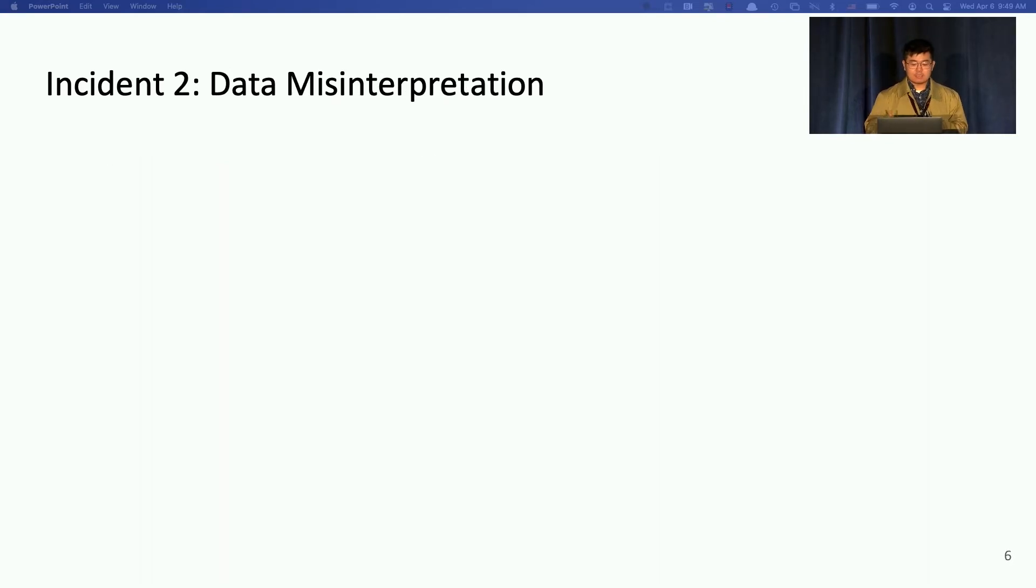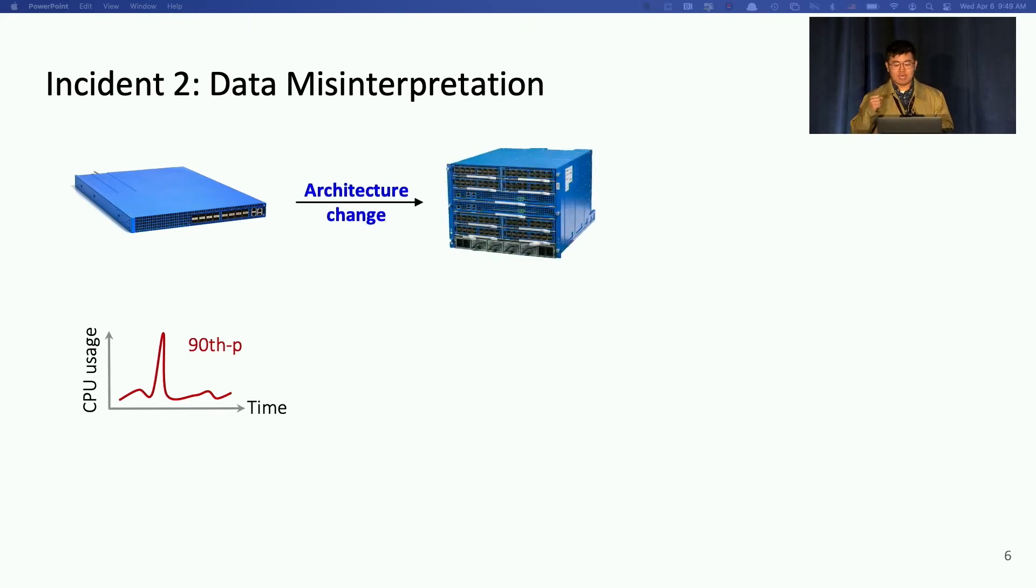The second incident is about data interpretation in some hidden way. So we have a time series counter for 90 percentile CPU usage. So once this counter goes very high, an alert will be triggered and then further mitigation action will be adopted. For example, rebooting the switch or migrating the traffic away. Then, along with the trend of open source switching, we introduce FBOS and make architecture changes to use multiple sub-switches.